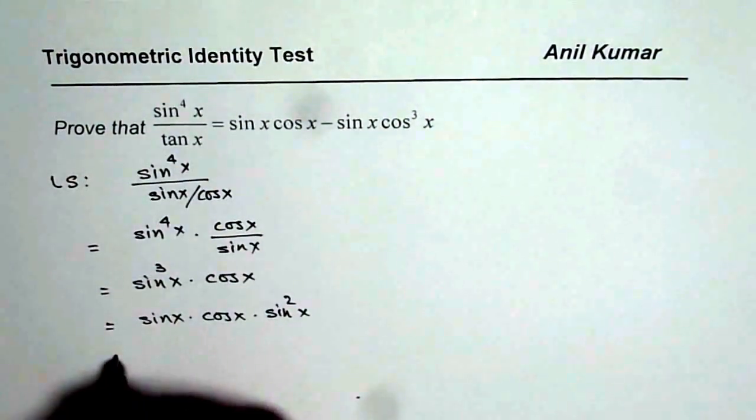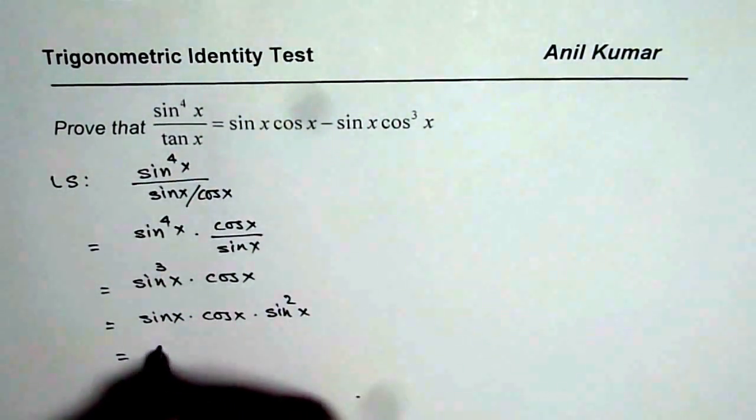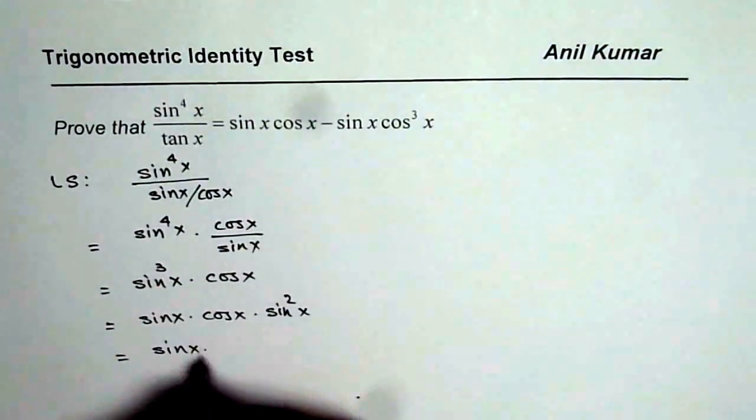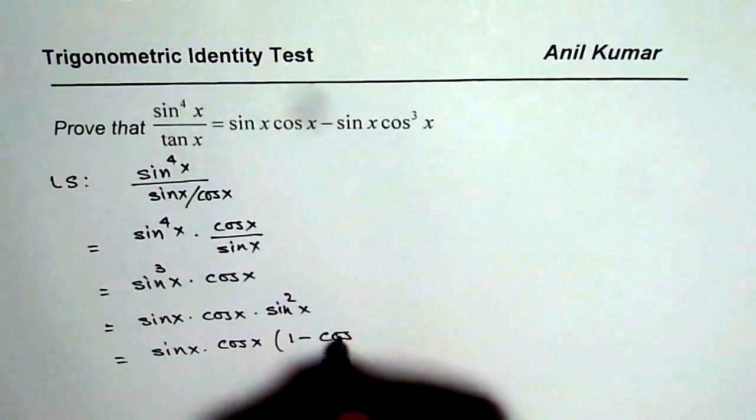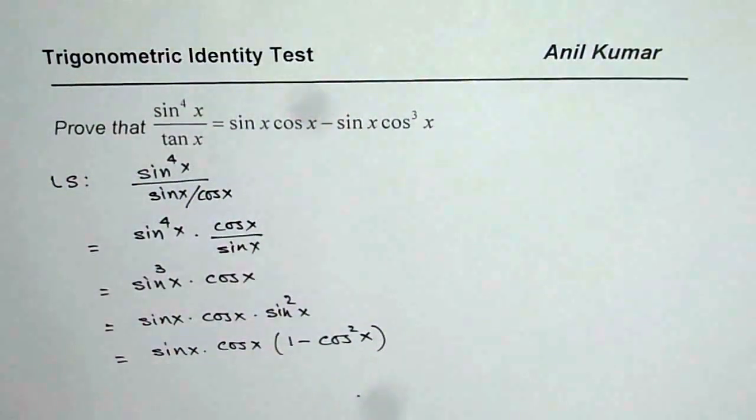And now we can write sin square x as 1 minus cos square x. So we get sin x times cos x and we will write sin square x as 1 minus cos square x. Do you see that?